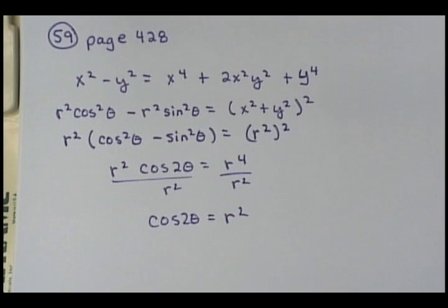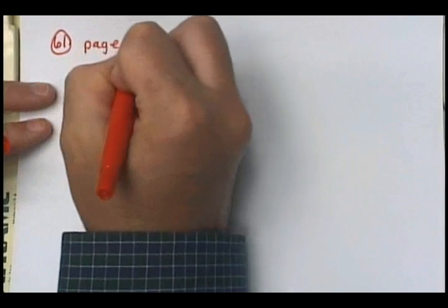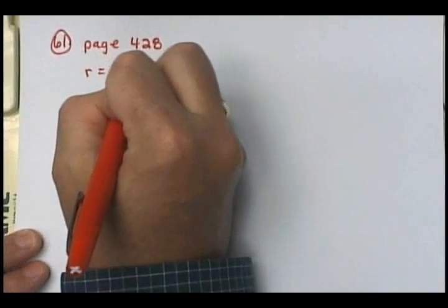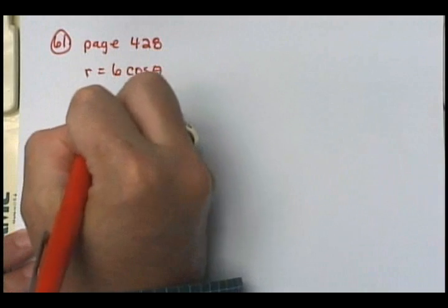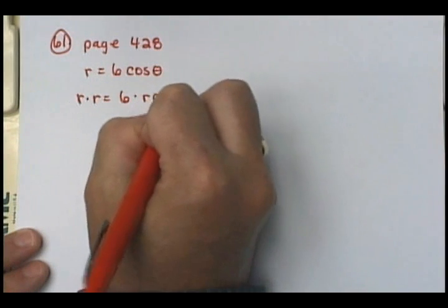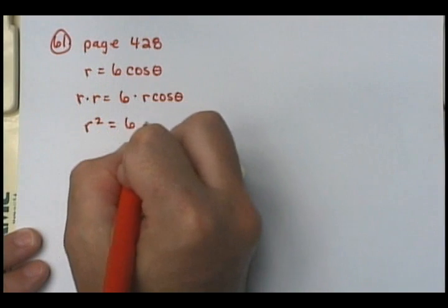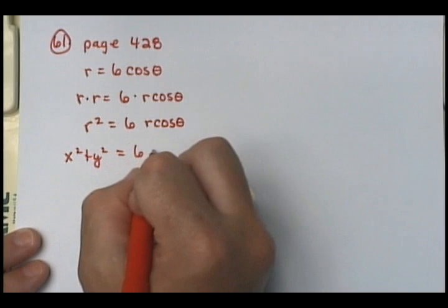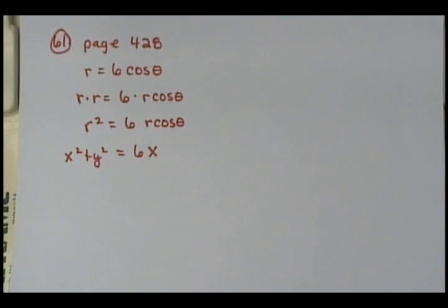Problems 61 through 67 say convert the following equations to rectangular form. For number 61, we have r equals 6 cosine theta. You're going to multiply both sides by r, giving r squared equals 6r cosine theta. R squared is x squared plus y squared, and r cosine theta is x. So you get x squared plus y squared equals 6x. Number 61 was kind of easy.